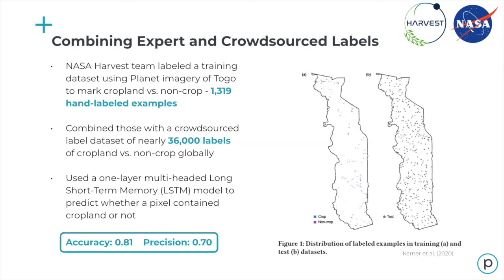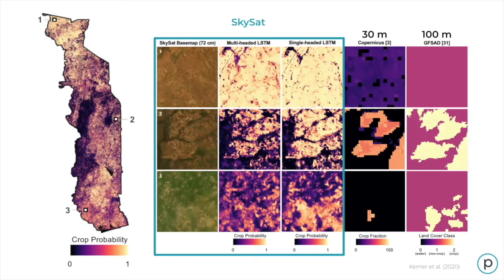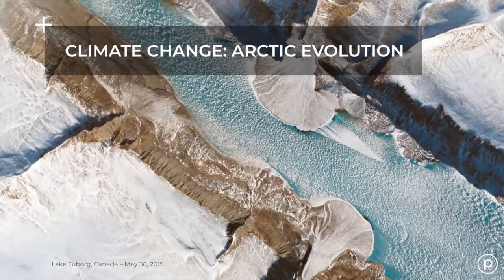For this process, they hand-labeled a training dataset using Planet imagery of Togo to mark cropland versus non-cropland, yielding just over 1,300 hand-labeled examples. They combined those with a crowdsourced labeled dataset of 36,000 labels of cropland versus non-cropland distributed all over the globe. They used a one-layer multi-headed LSTM model to predict whether a pixel contained cropland or not, achieving accuracy of about 0.81 and precision of 0.7. The crop probability map used a combination of SkySat-based maps at 72-centimeter resolution and PlanetScope imagery, and compared to lower-resolution 30-meter and 100-meter public data, the results were much better — giving a much clearer idea of smallholder farms and where the crops are.